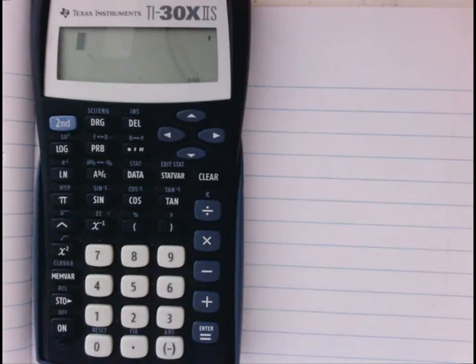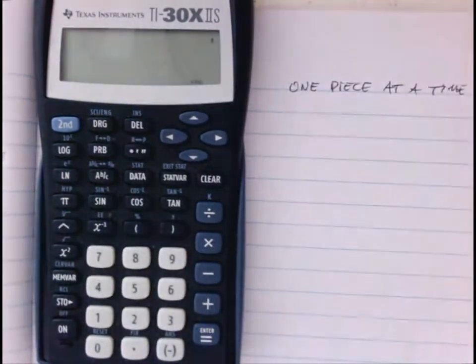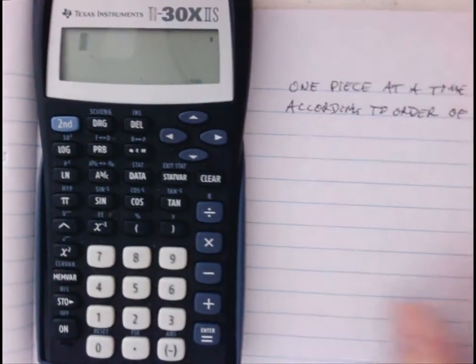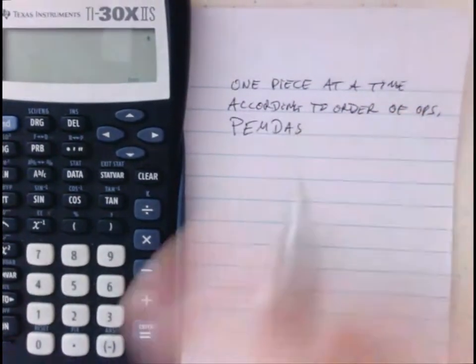Hi. For big complicated calculations on a scientific calculator like this TI-30X, it is possible to do it all in one calculation, but I don't recommend that. I recommend doing one piece at a time according to the rules of order of operations, which most of us know as PEMDAS.